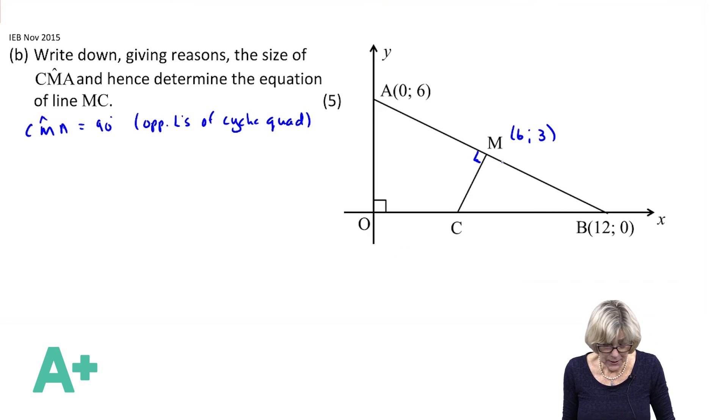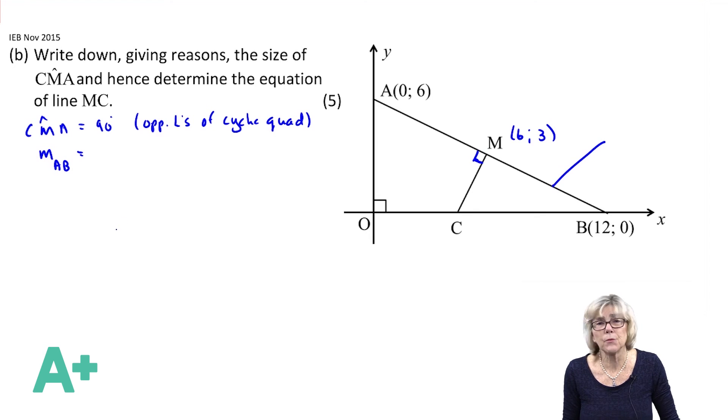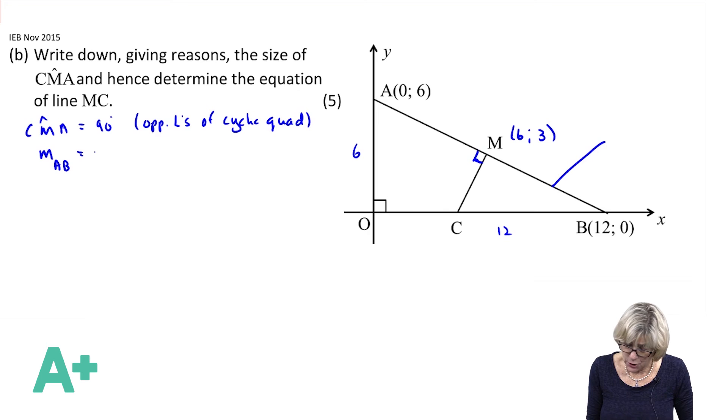So now we've got to find the equation of MC. We see the 90 degrees and immediately I'm going to find the gradient of AB. So I'm going to do mAB and that is easy - we can do rise over run. So I'm rising 6 and I'm running 12, and I can see it's a negative gradient. So I get my gradient to be -6/12 and so I get it to be -1/2.